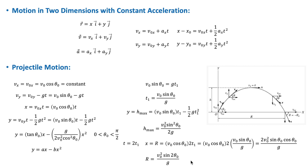As in free fall, if we neglect air resistance and the free fall acceleration g is constant in both magnitude and direction throughout the motion, then the path of the projectile is always a parabola, depending on the magnitude and direction of the initial velocity.